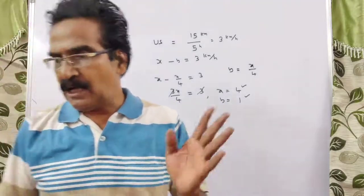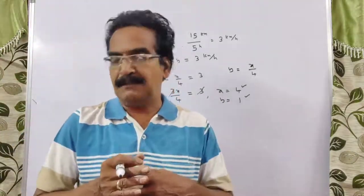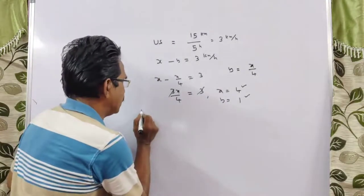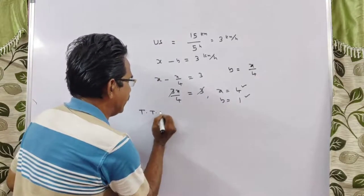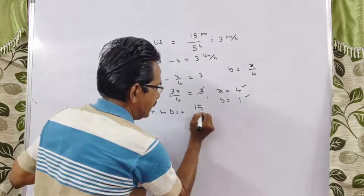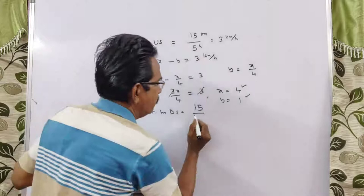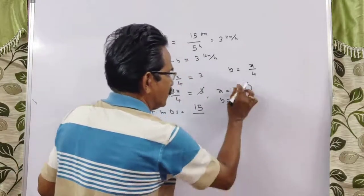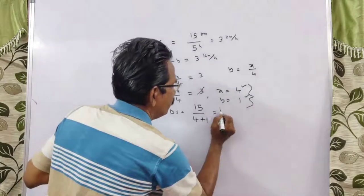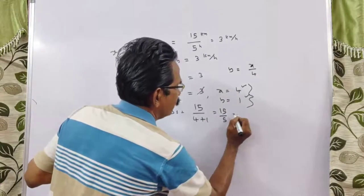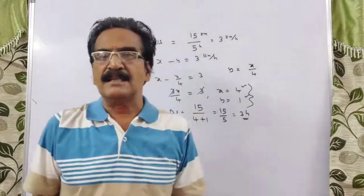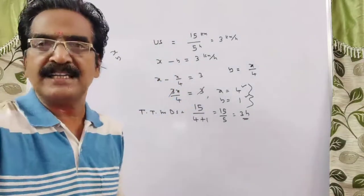What is the question? How long will it take to cover the same distance downstream? Time taken in downstream is equal to distance 15 km divided by downstream velocity. Downstream velocity is X plus Y, that is 4 plus 1 equals 5. So 15 by 5 equals 3 hours is your answer. Thank you, friends, have a nice day.